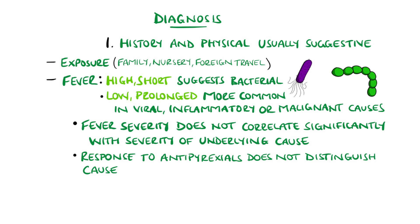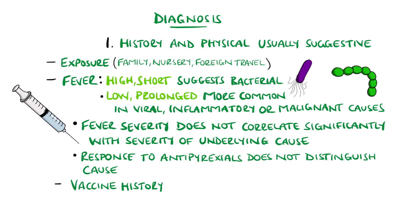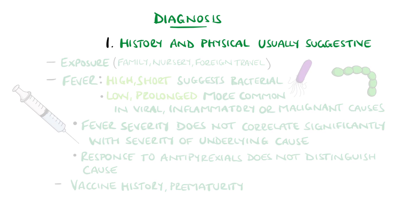It's important to ask about the vaccination history and features surrounding birth — for example, prematurity — as an incomplete vaccine history or prematurity may increase the likelihood of a serious underlying infection.